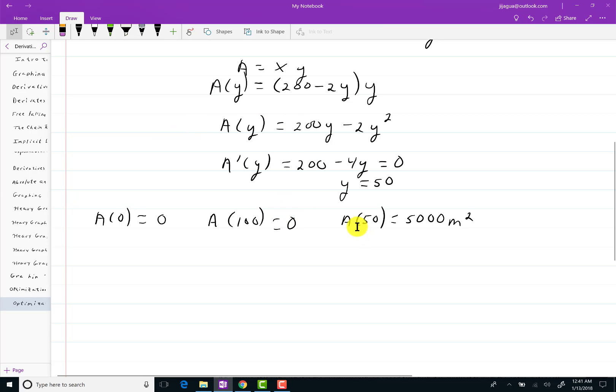So clearly, when y is 50, this thing has its maximum possible value. Well then, what is x? x was 200 - 2y. That will be 100.